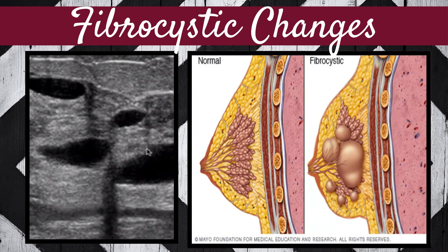The ultrasound image on this slide represents the classic appearance of fibrocystic changes — multiple cysts of varying size and varying complexity visualized within the breast tissue. The other image is a schematic demonstrating the normal breast with its ducts, lobules, and lobes compared to the fibrocystic breast, where the lobules are enlarging and producing multiple cysts of varying size. This schematic is from the Mayo Foundation for Medical Education and Research.